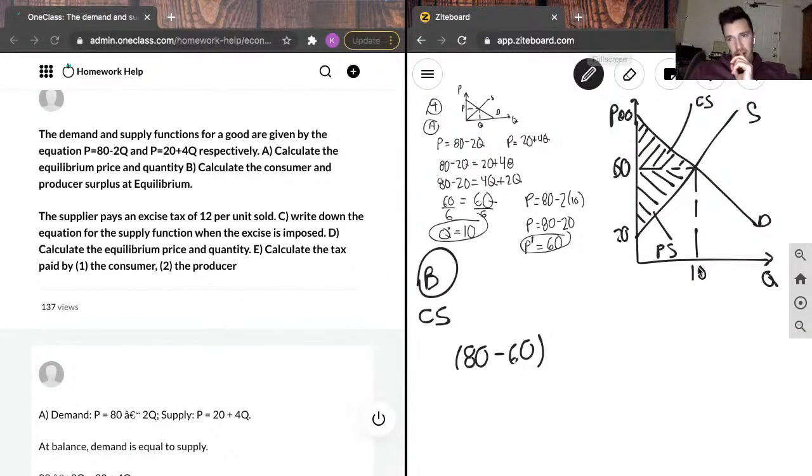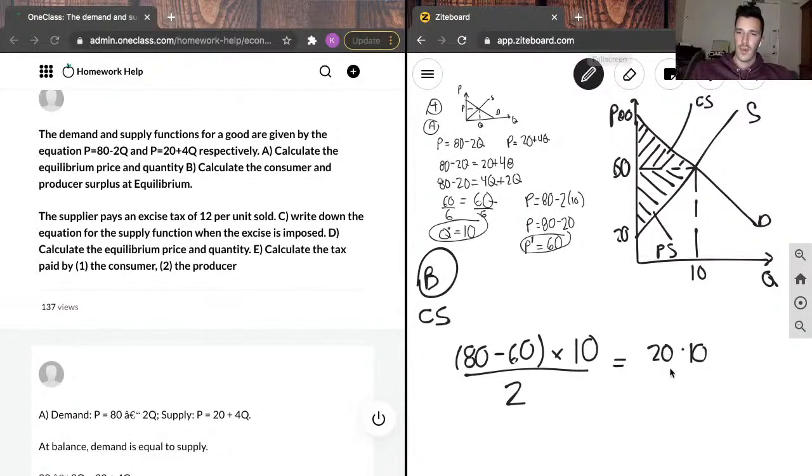And our base, this point, we know that q is 10, your q is 0, so our base is going to be 10. And if we just left it at that, we would calculate the area of this entire box, but because it's a triangle, we need to divide it by 2. So, our consumer surplus is then going to be 80 minus 60 is 20 times 10 over 2. So, our consumer surplus is going to be 200 over 2. So, our consumer surplus is going to be 100.